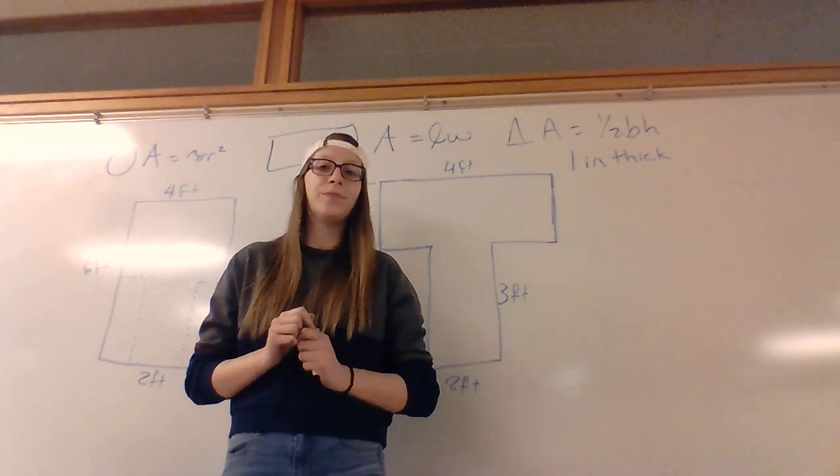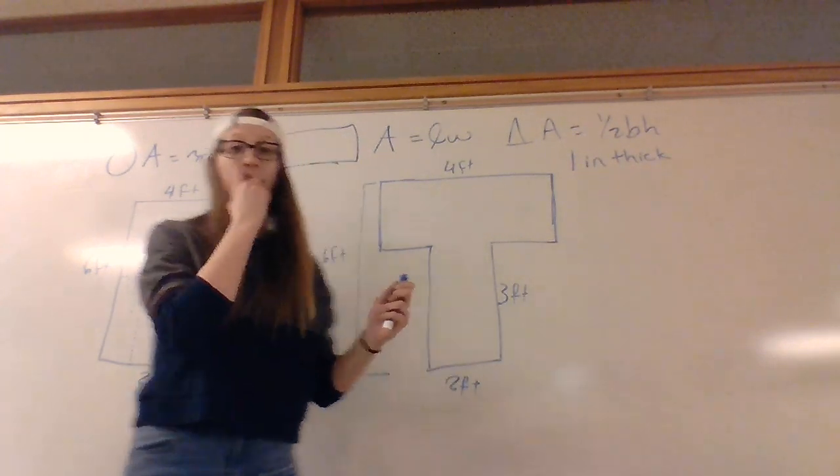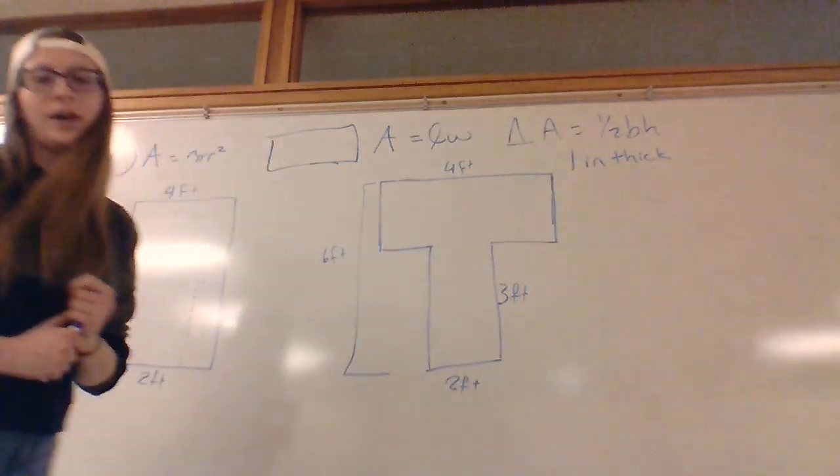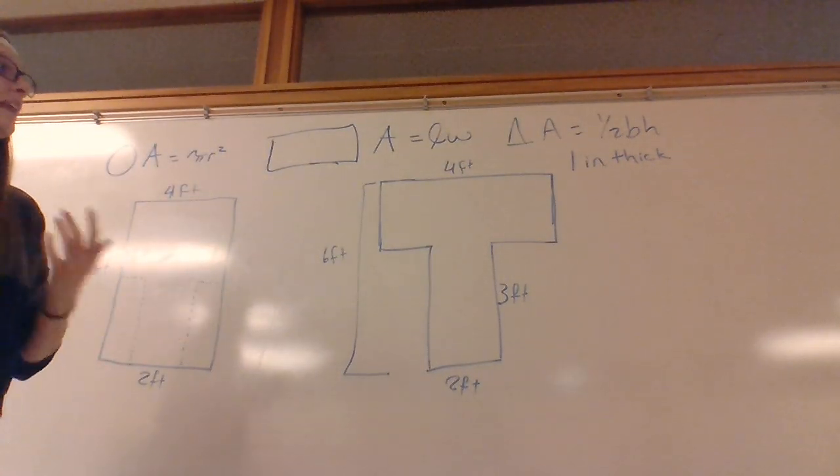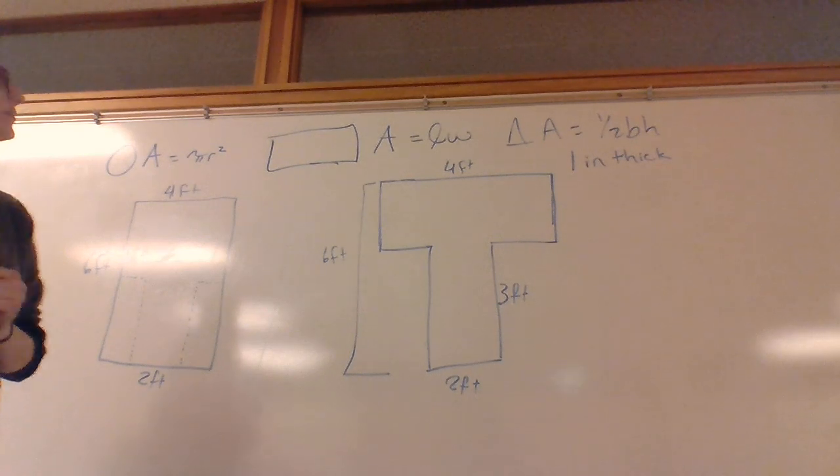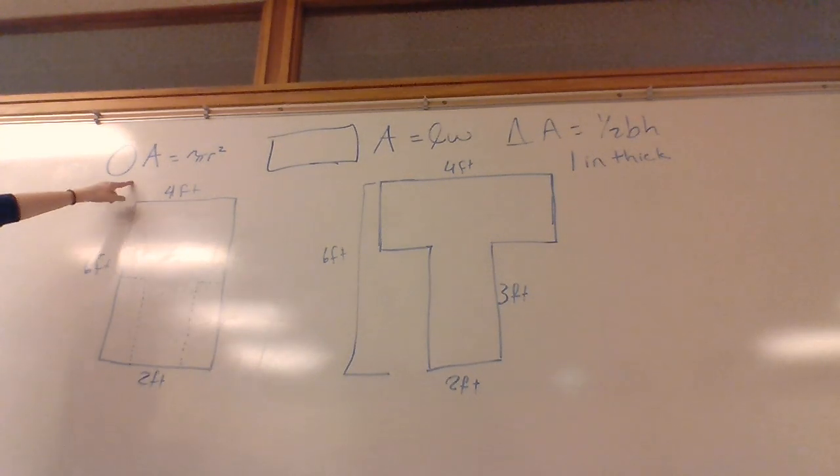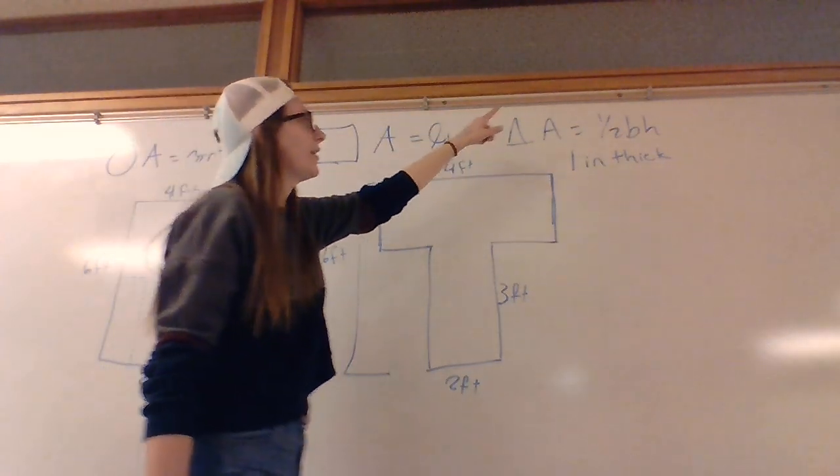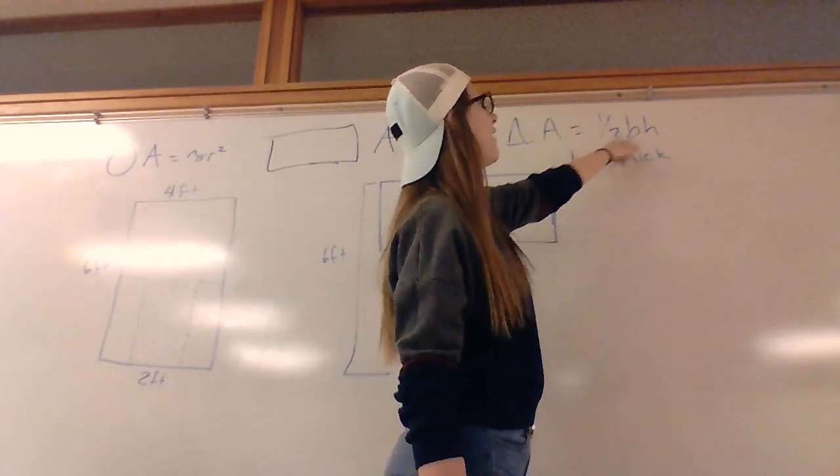The first thing I'm going to do is go over the area formulas for my students, because these are the areas that they'll need to make the nets to find the surface areas. The area of a circle is pi r squared, the area of a rectangle is length times width, and the area of a triangle is one half base times height.